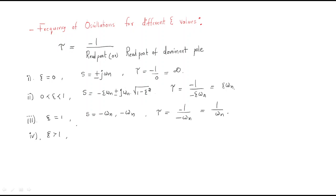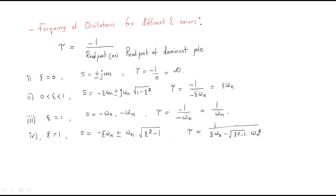The fourth case is for zeta greater than one. This generates two poles: minus zeta omega n plus or minus omega n times the square root of zeta squared minus 1. The time constant is 1 divided by zeta omega n minus omega n times the square root of zeta squared minus 1. We take only the dominant pole for this calculation.